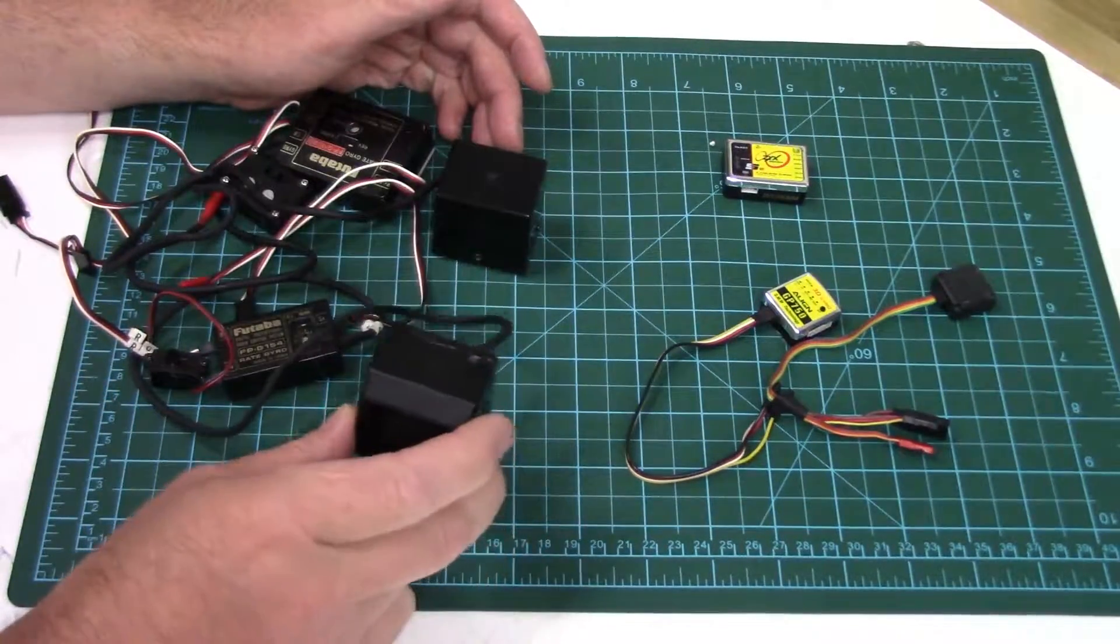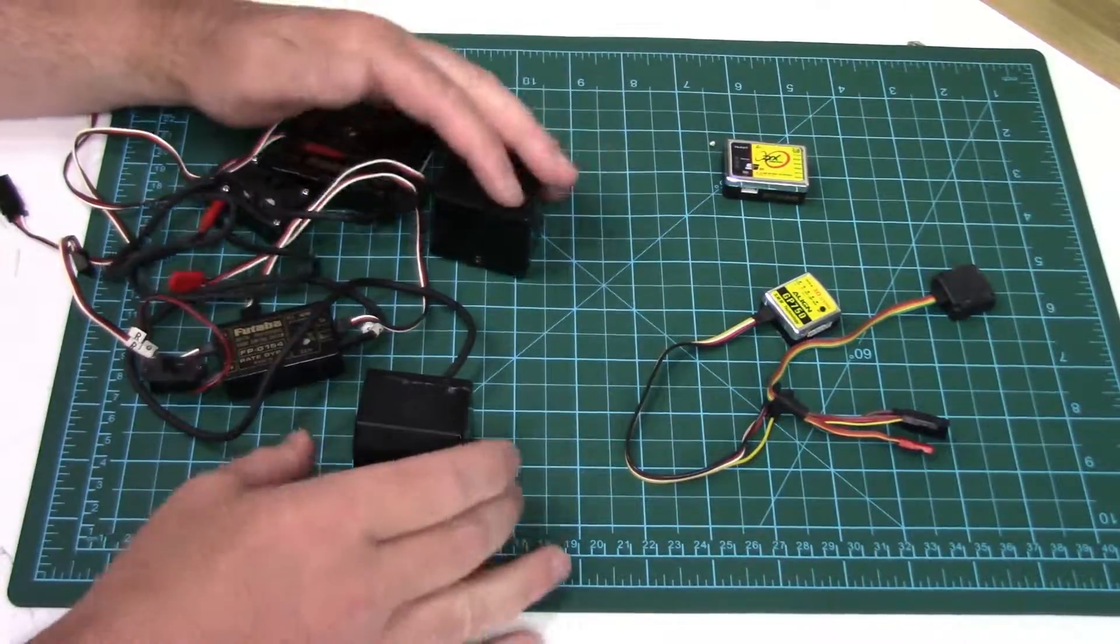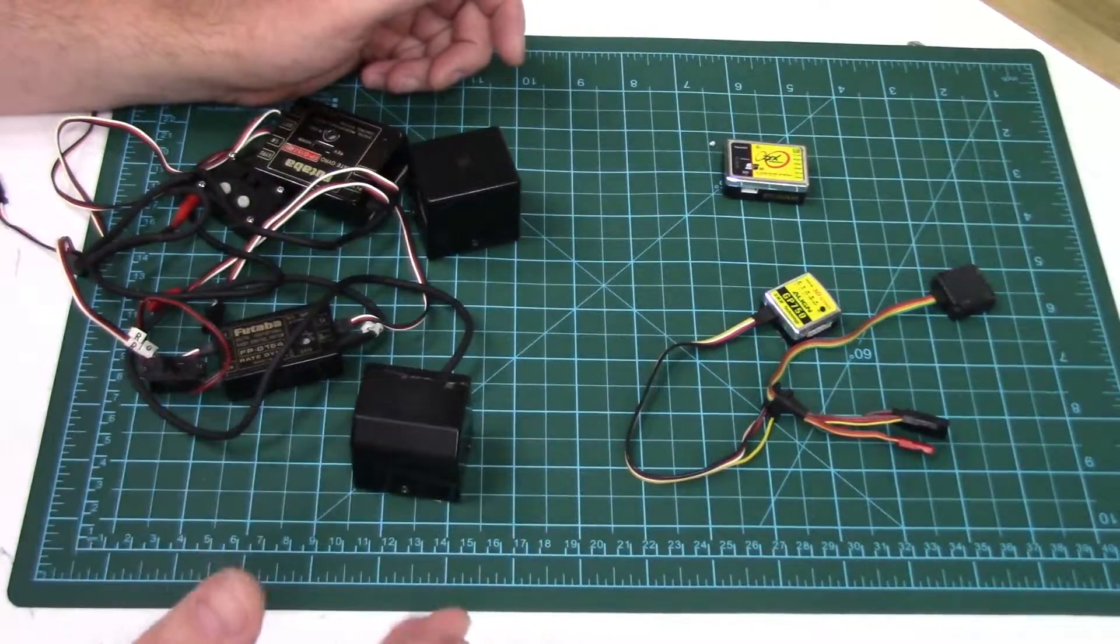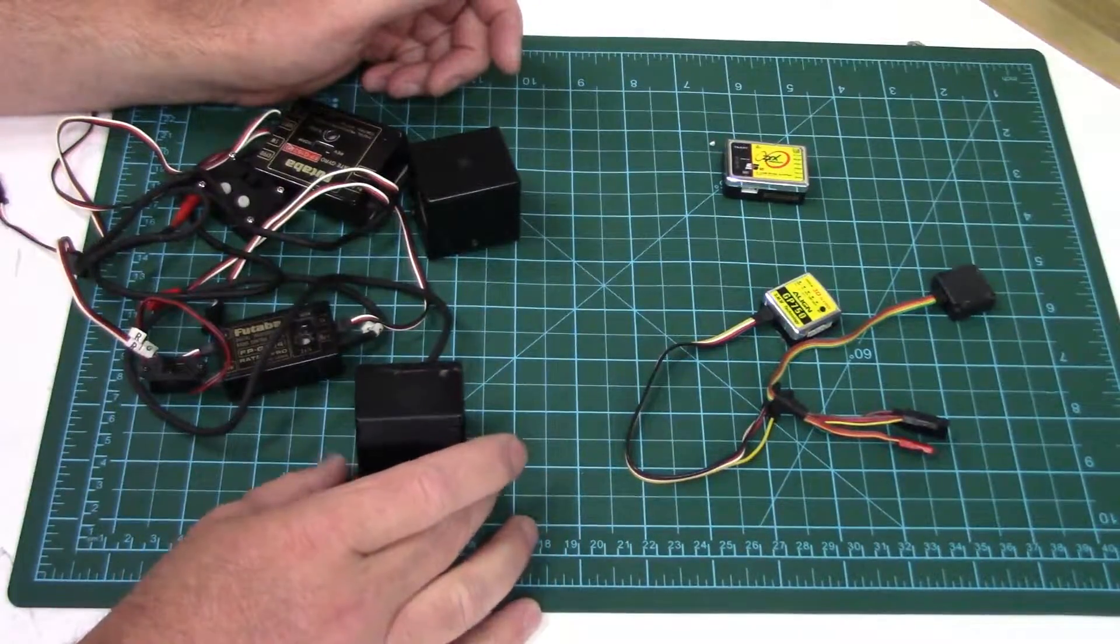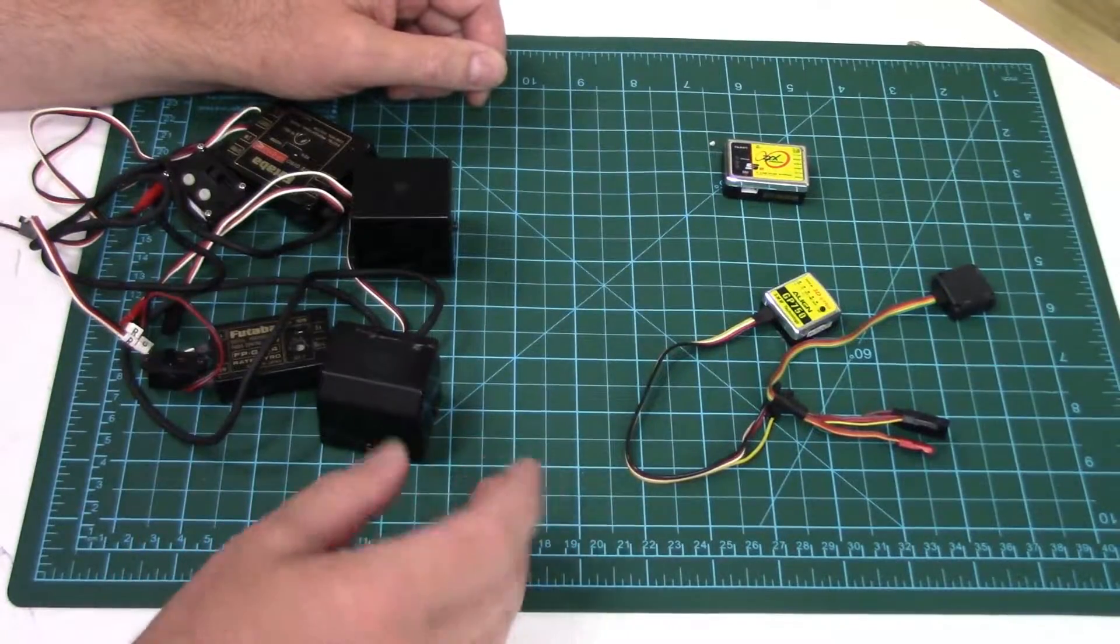These use a spinning weight in them that's spinning really quick and that's what's acting as your gyroscope. It is a gyroscope and it resists changes to movement and that's what detects the movement and how it corrects for them.